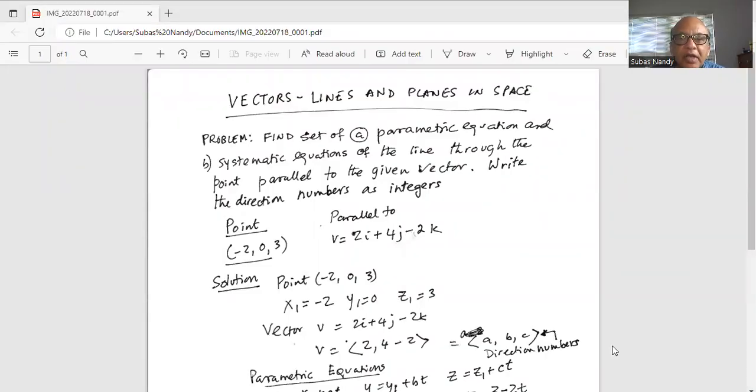Problem is find a set of parametric equations, part A and part B, systematic equations of the line through the point parallel to the given vector. Write the direction numbers as integers.